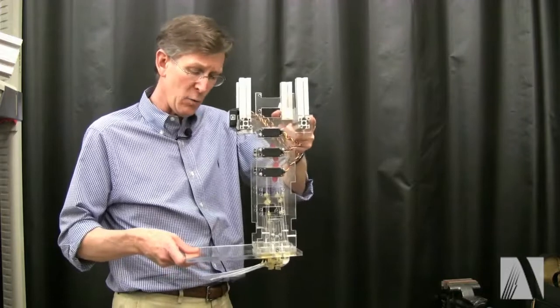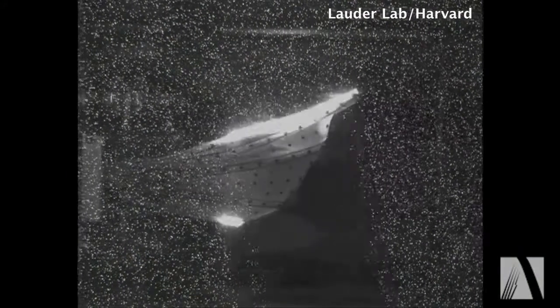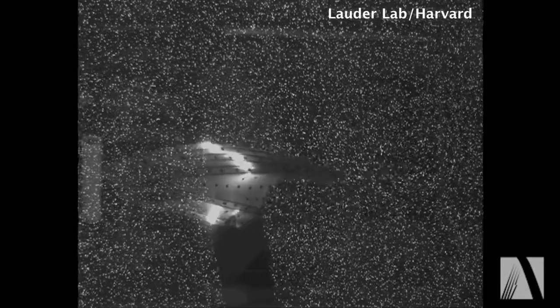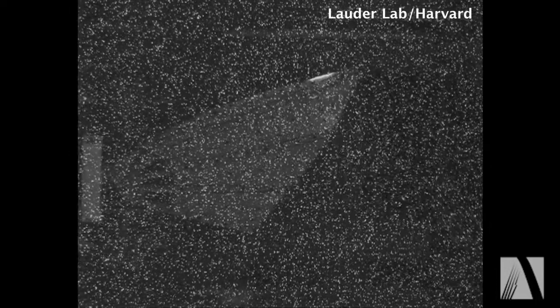As the fin flaps back and forth we can measure the forces that the fin is generating, measure the fluid flow over the fin and begin to understand then using a simple robotic device how fish fins move and generate force when they flap back and forth in the water.